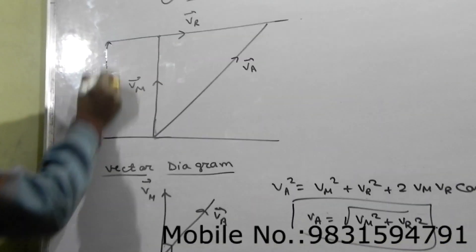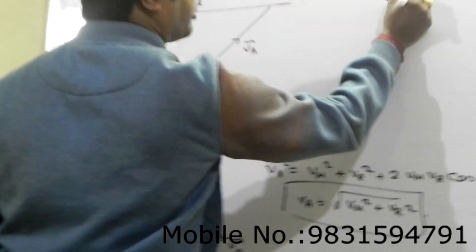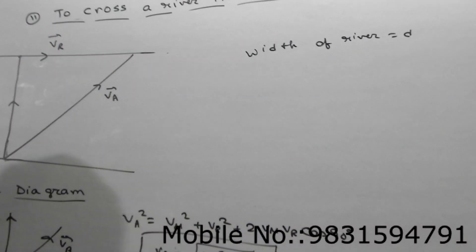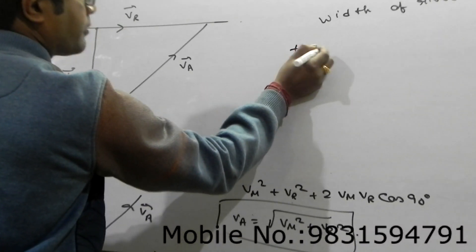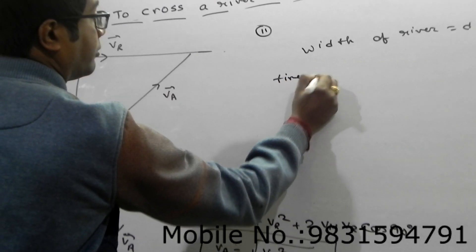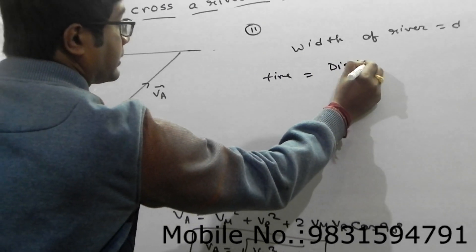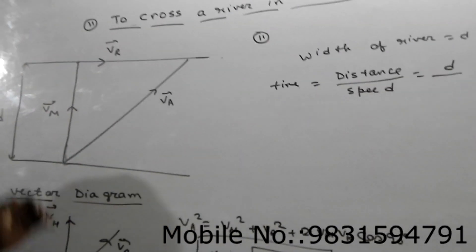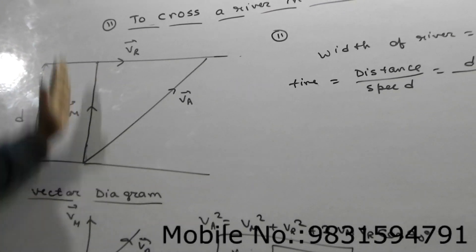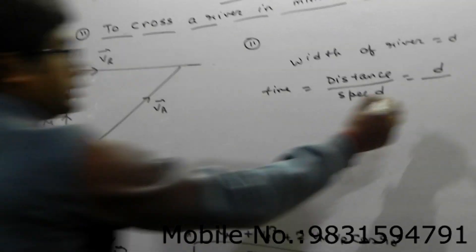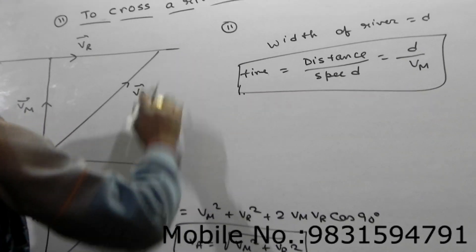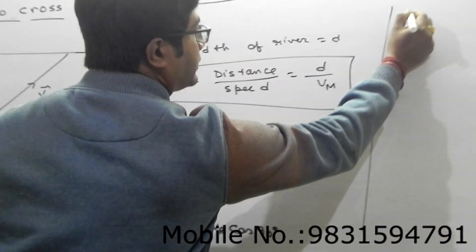So VA will be root of VN square plus VR square first. And if width of the river D, width of the river D, which means straight distance. Then time, case number 2, time will be distance by speed. Distance D, which type of distance? Straight distance, that's why straight velocity, which one? So VN. Not VR or not VA. Straight distance, straight velocity, D by VN. This is the time taken.